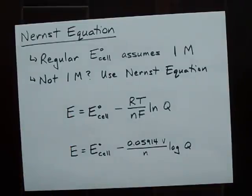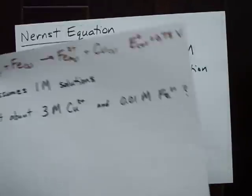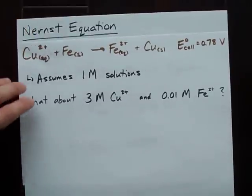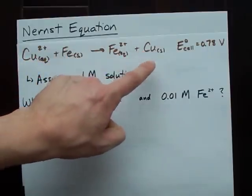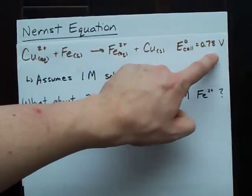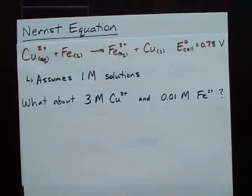That's going to make a lot more sense to you when I do it for this reaction right here. We have copper 2 and iron making iron 2 and copper. Oh, yeah. We already did this one. It's 0.78 volts. But that assumes 1 mole per liter.